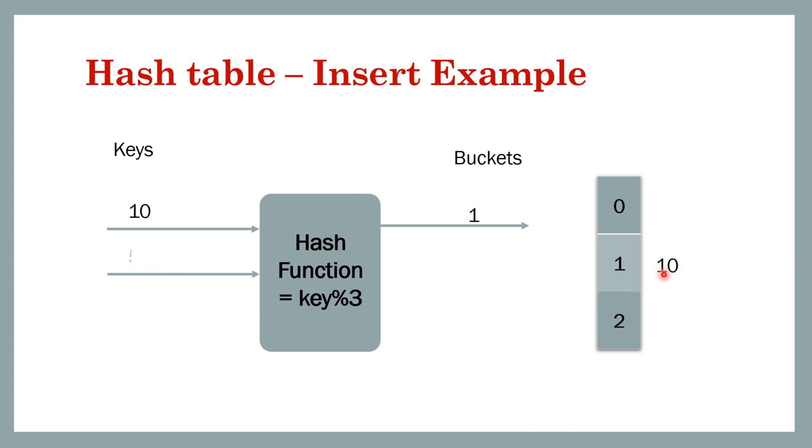Then let's say we have 5. 5 modulo 3 is 2, so bucket id is 2, so 5 will be stored here. Then we have 2. In this case bucket id is 2 since 2 modulo 3 is 2, so 2 also will be stored in bucket number 2. You see that there can be multiple keys in the same bucket. In bucket 2 we have 5 and 2, in bucket 1 we have 10, and in bucket 0 we don't have any data.